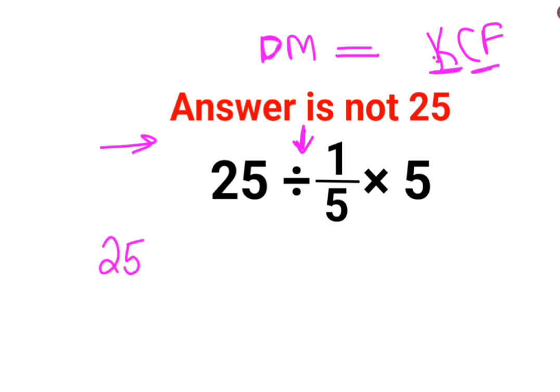C stands for changing the division sign to multiplication. F stands for flipping or taking reciprocal of 1 upon 5 which is 5.